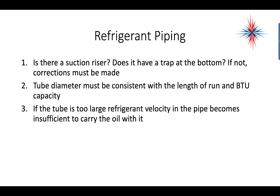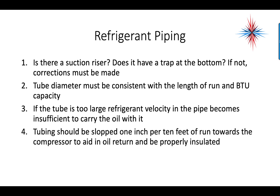If the tube is too large, the refrigerant velocity in the pipes becomes insufficient to carry the oil with it. This is talking about a system without an oil separator. If we are circulating the oil, we're sending it out the liquid line with the refrigerant, through the metering device and the evaporator. If that pipe is too large coming out of the evaporator, we won't have sufficient velocity to force the oil back to the compressor. Tubing should be sloped 1 inch per 10 feet of run towards the compressor to aid in oil return, and it should be properly insulated.